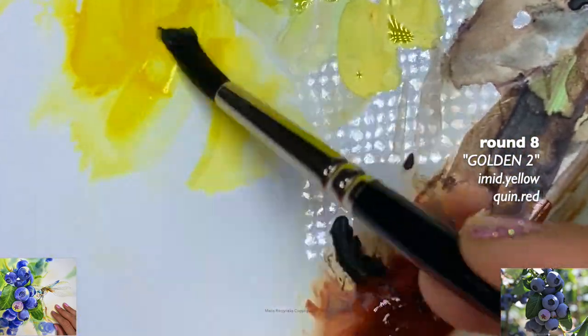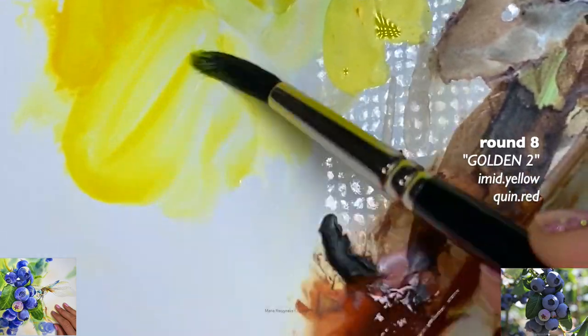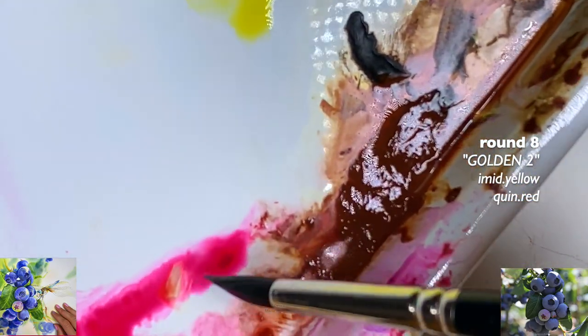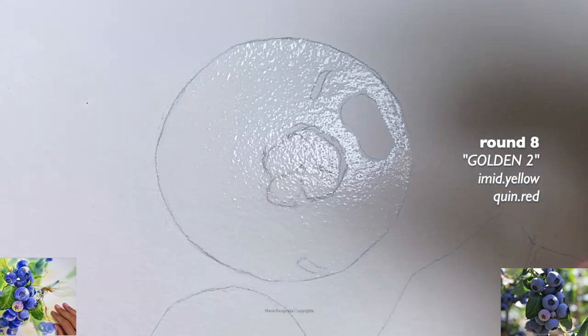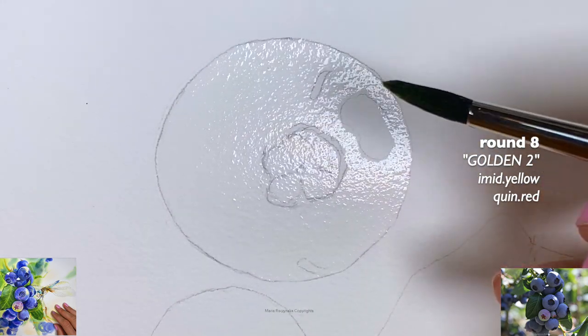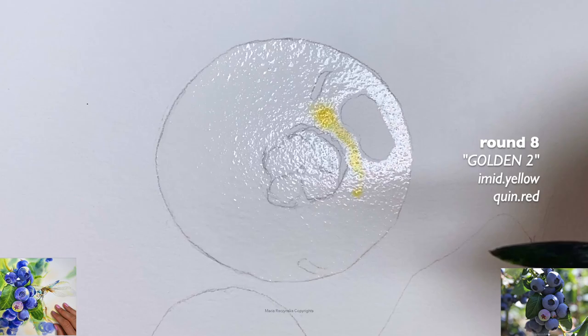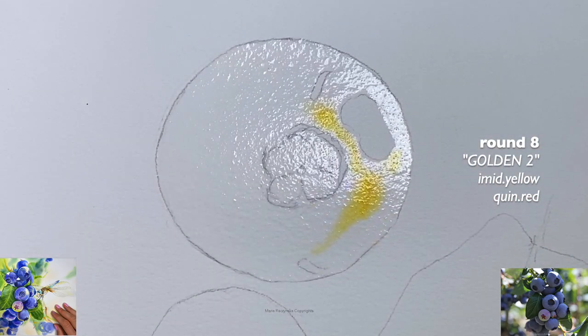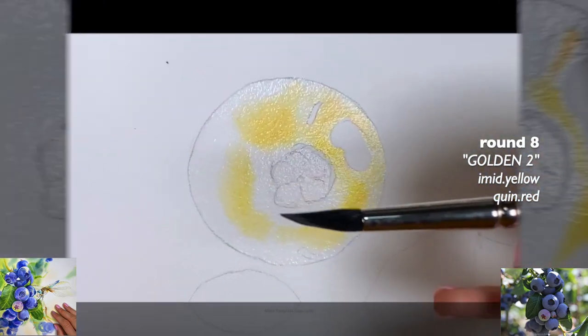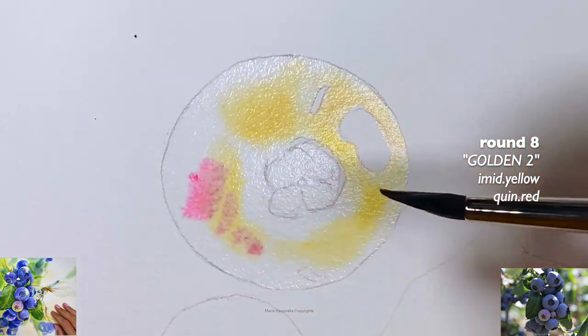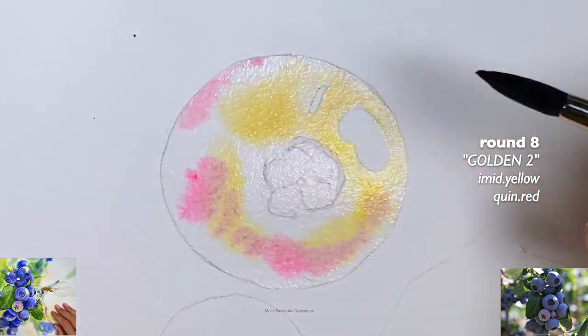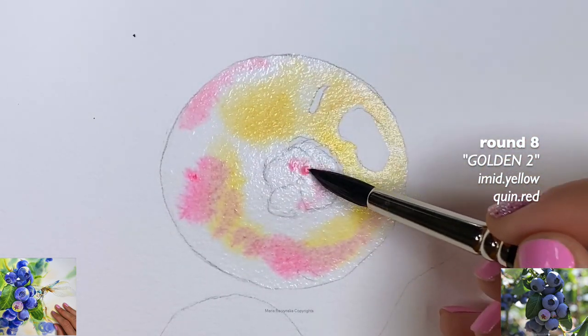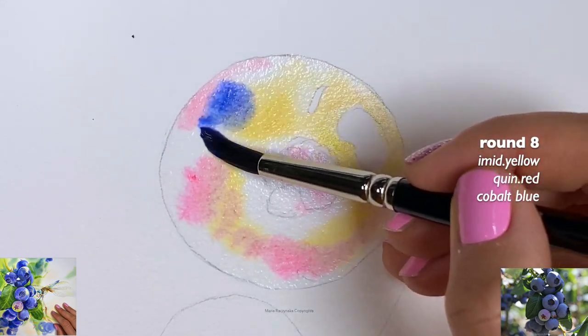This is my imidazalone yellow with a little bit of quinacridone red. I'm just grabbing it quickly. I don't want these colors to be too mixed up on the palette. I want this mixing to happen here on the paper so I can see separation of colors. I'm going to grab a little more of it and quickly add it over here and over here just to have some of that reddish undertone, and maybe over here even in the center.